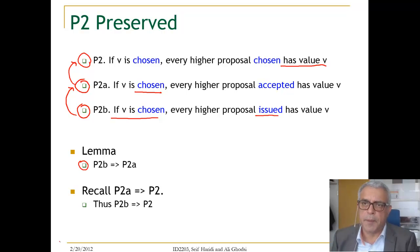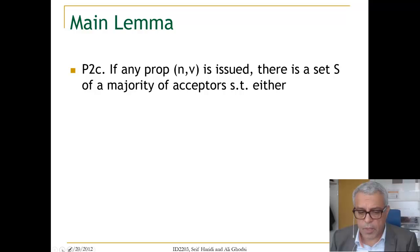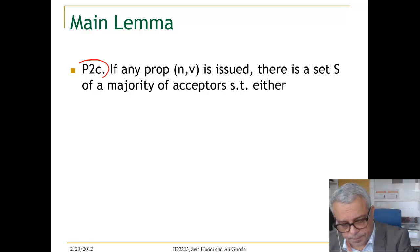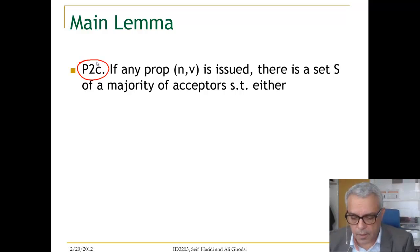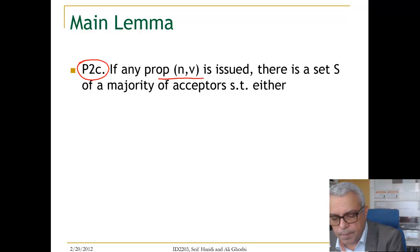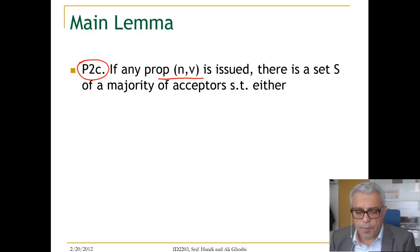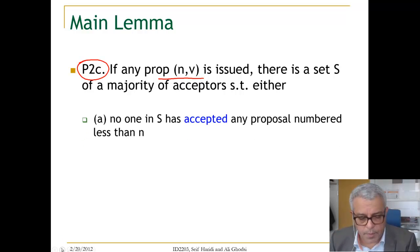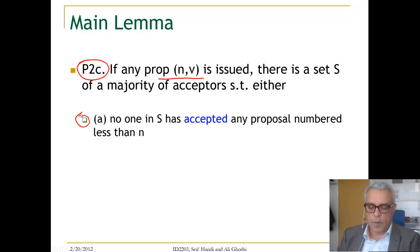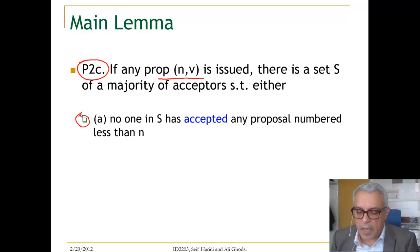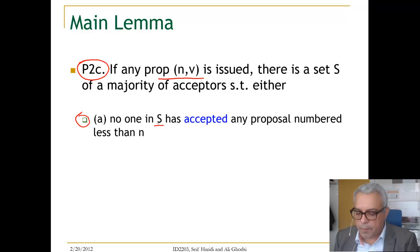So now, how do we achieve P2B? One way to achieve P2B is by having this condition, P2C, which says the following: if a proposal with proposal number N and value V is issued, then there should be a majority set of acceptors with certain properties. One possible property is that you are allowed to issue value V if no one in this majority set has accepted any proposal numbered less than N.